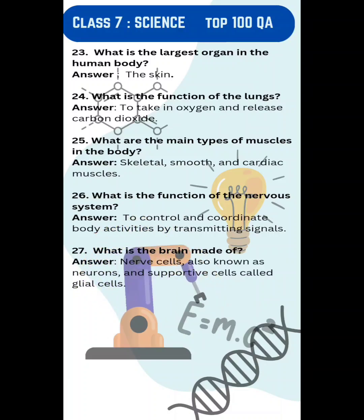25. What are the main types of muscles in the body? Answer: Skeletal, smooth, and cardiac muscles.